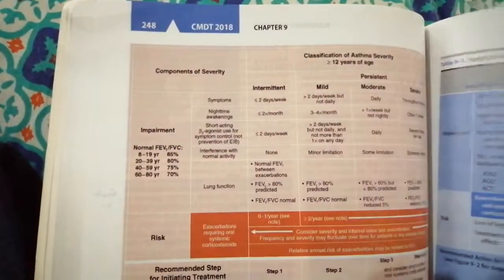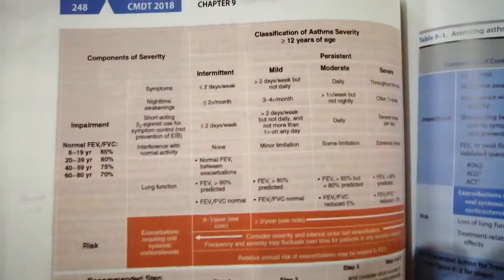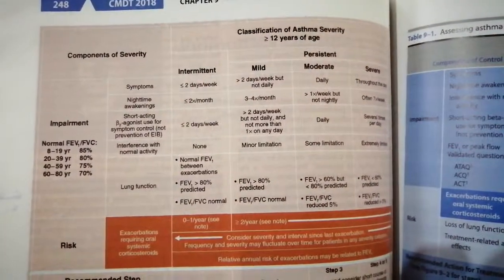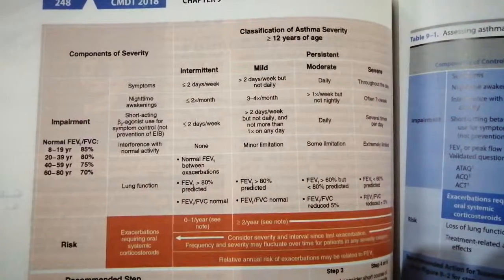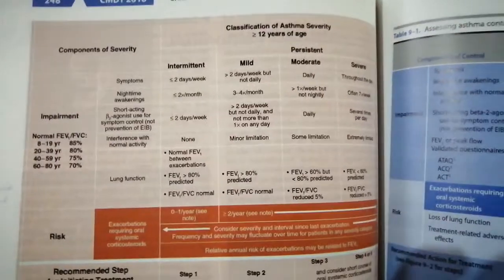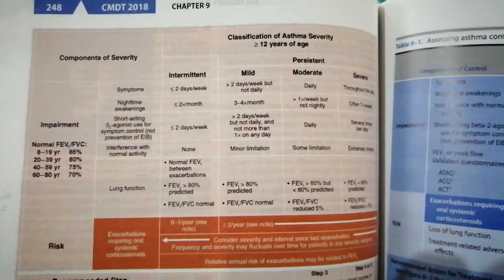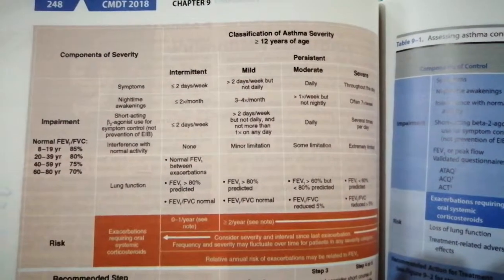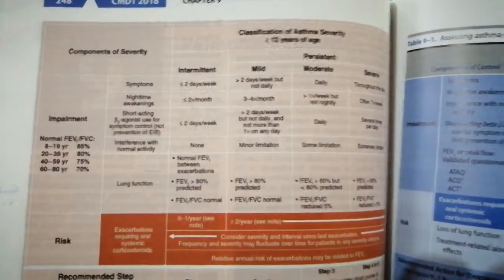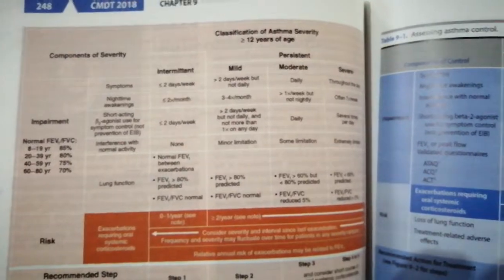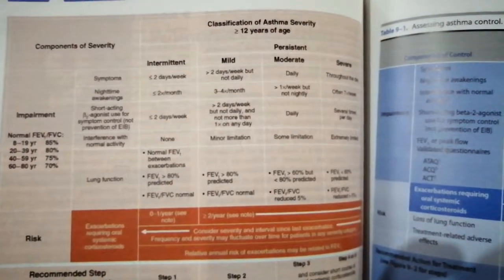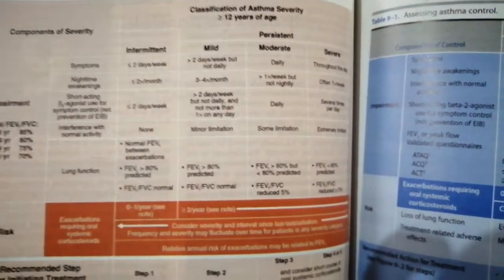In mild asthma, treatment consists of short-acting beta-agonists, and alongside that you may sometimes prescribe inhaled corticosteroids at a moderate dose.